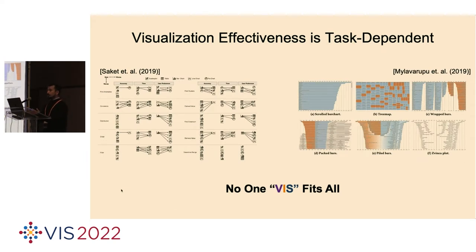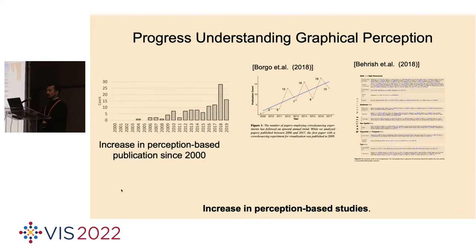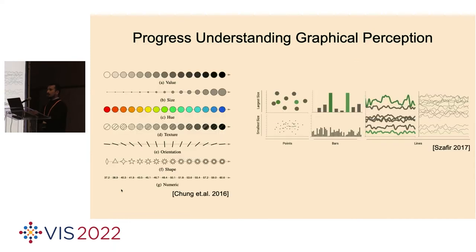Socket et al. conducted a study to investigate the task-based effectiveness of five visualization types on small datasets using 10 low-level tasks on three measures: accuracy, time completion, and subject preference. They agree with our conclusion from the survey when they stated no one size fits all. In other words, depending upon the task at hand, various visualizations can perform better or worse. Even within a single visualization type, design variations can have serious effects on performance. We witnessed the continuously evolving nature of perceptual research, with the majority focusing on visual task judgment.